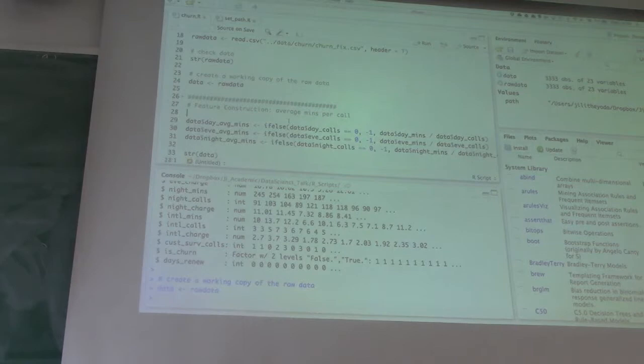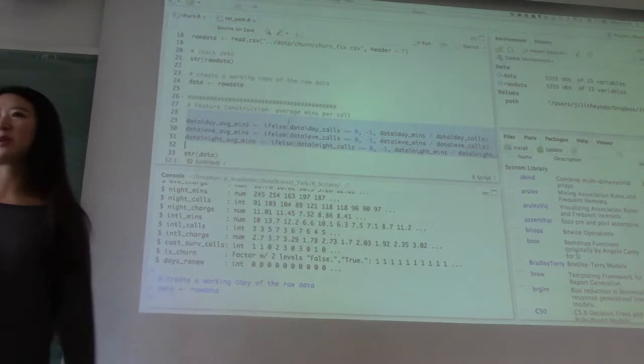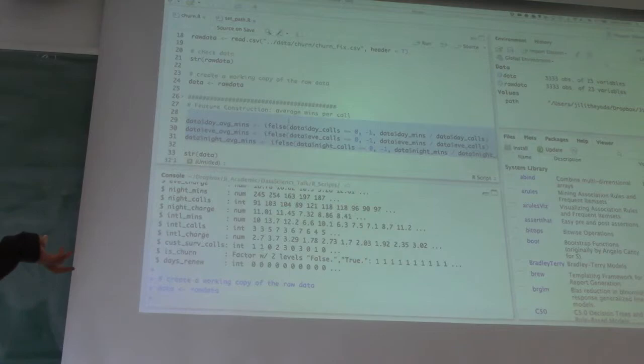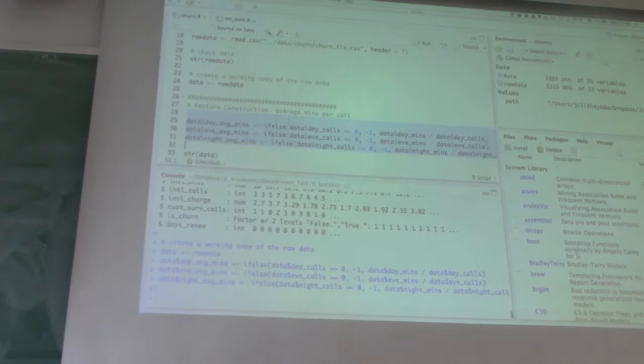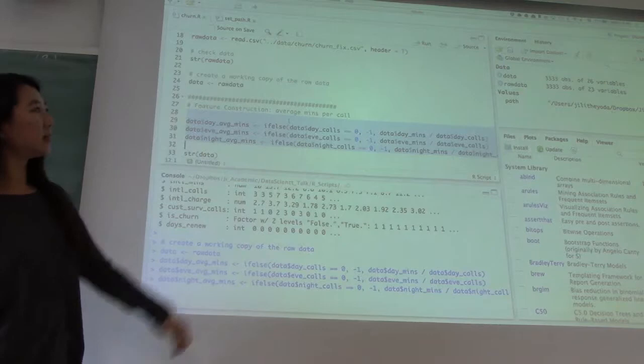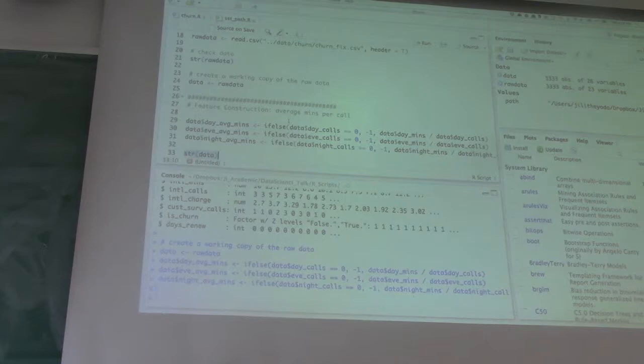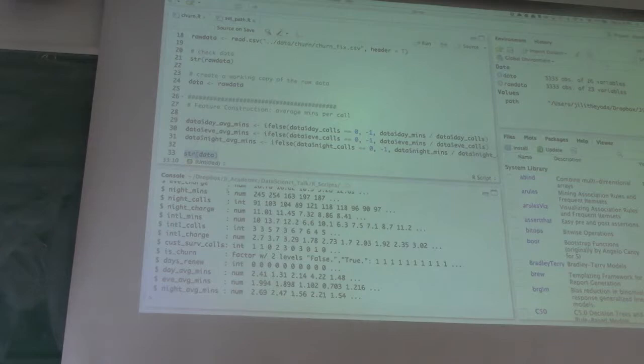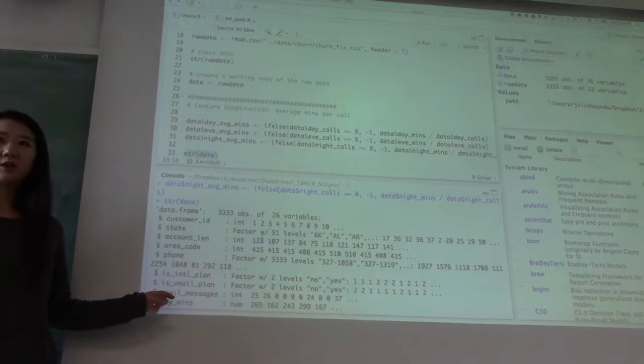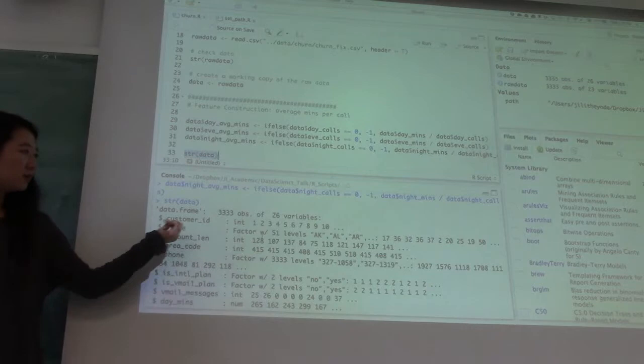Next, I demo feature construction. We're going to construct three features because we have day minutes and day calls. We can calculate in the daytime what's the average minutes per call, and same thing for evening and night. So I construct these three features over here. Now the data set has three more columns than the raw data set. You can see that from here. There's another way to quickly check the data set, which is STR, structure of data. If you do structure of data, you have a quick summary overview in the output window. It tells you what the overall looks like and especially what's the column type of each column, which you want to check.